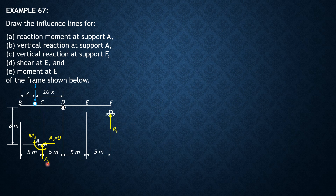To construct the influence line for Ay by summing moments at D, two unknowns would be involved. So the technique is to first construct the influence line for RF. To solve for RF, there are two situations: first when the unit load moves from B to D, then from D to F.